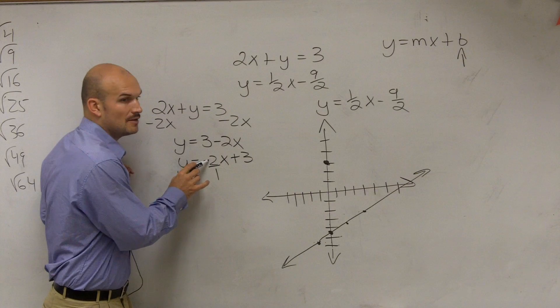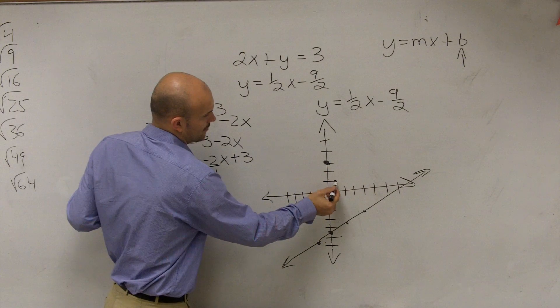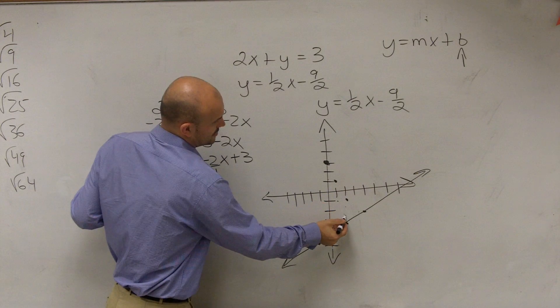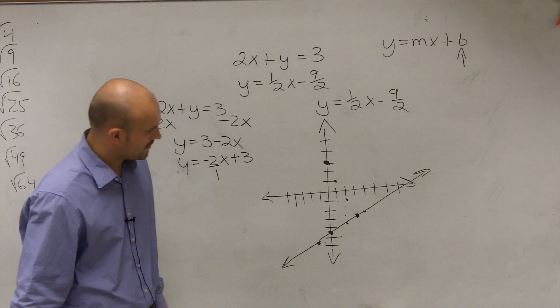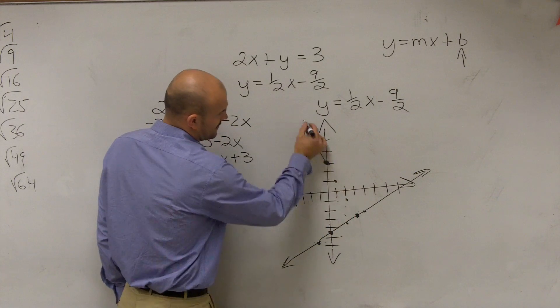Now this is down 2 to the right 1. So you go down 2 to the right 1. Down 2 to the right 1. Down 2 to the right 1. And I don't have a perfect graph, but I'm just going to assume that it intersects at that point. So I connect my graph.